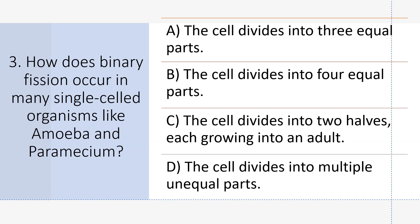How does binary fission occur in many single-celled organisms like amoeba and paramecium? Answer C: The cell divides into two halves, each growing into an adult.